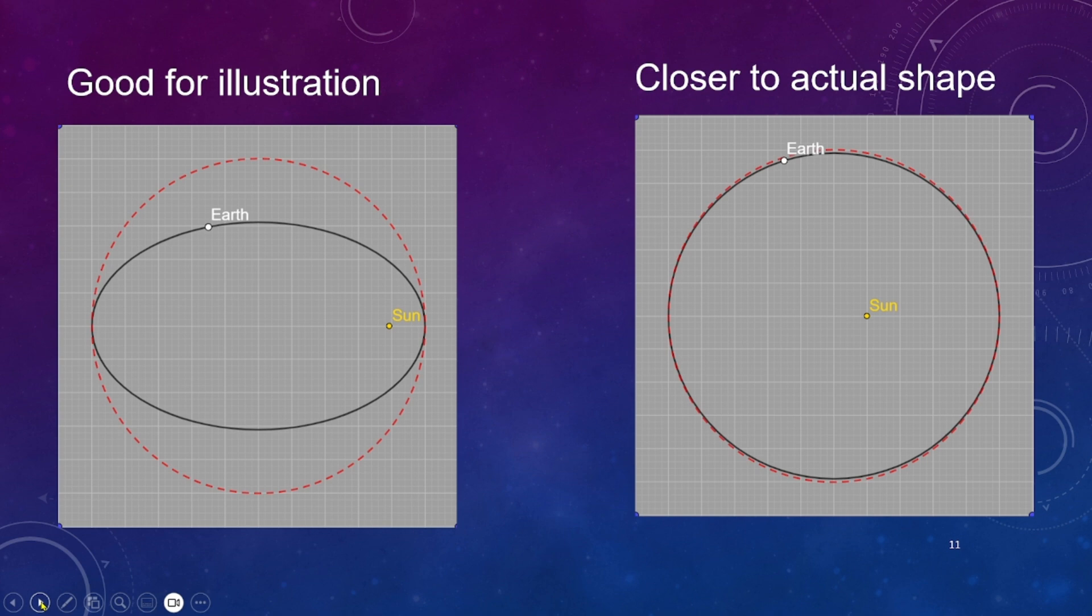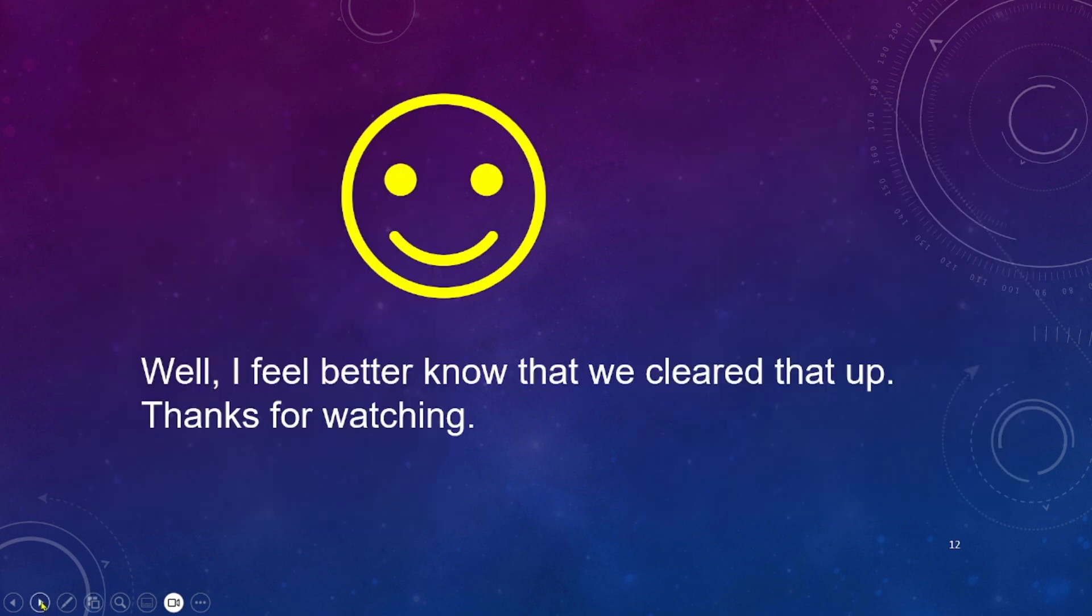So in conclusion, the squished ellipse that we usually use is good for illustration, but the ellipse that's very close to being a circle is closer to the actual shape. Well, I'm glad we cleared that up and thanks for watching.